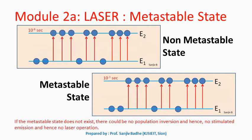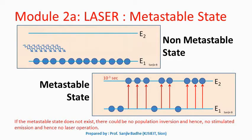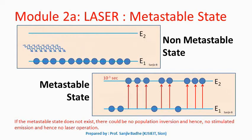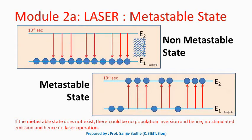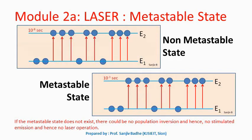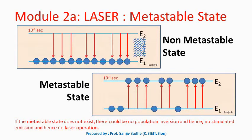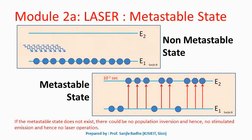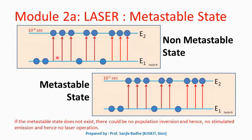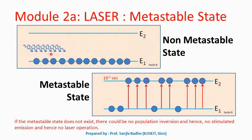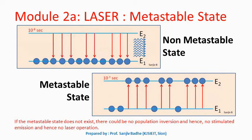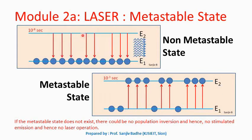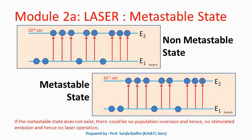If we want light amplification, then we need to have a large number of atoms in the excited state. That is, population inversion has to be achieved, and this population inversion is achieved with the help of pumping. We continuously supply energy to the atoms in the lower energy level so that they are excited to the higher energy level.